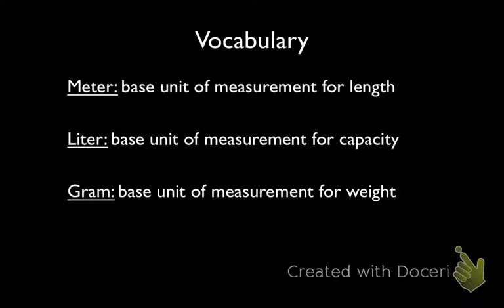Unlike in the customary system, where there are different values, the metric system uses values of base 10. And so each value is going to be 10 times bigger than the value before it. And we'll see how that works as we look at the next table.